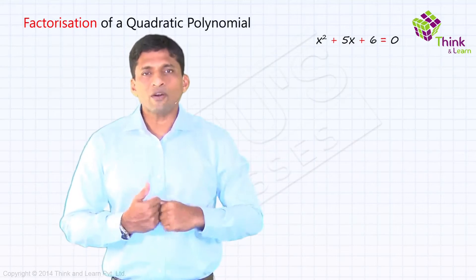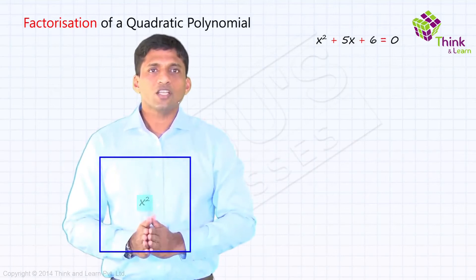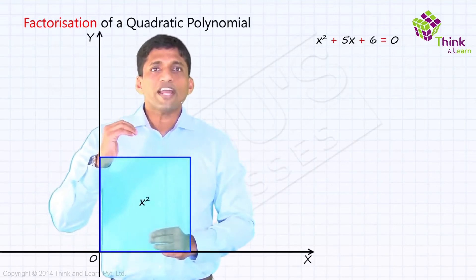Now, what is x square in a diagram? x square is nothing but you take a square with side x. Now, to get 5x, first let's take x.